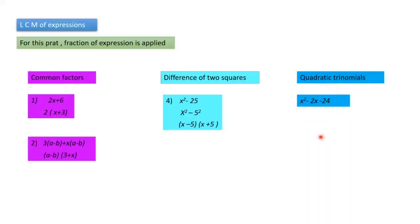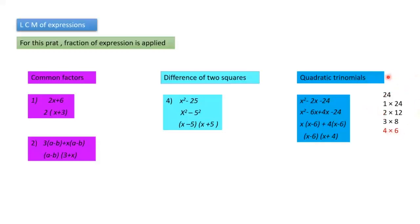Now quadratic trinomials. For example: x² − 2x − 24. Rewrite it as x² − 6x + 4x − 24. How does this happen? You need to find factors of 24: 1×24, 2×12, etc. By subtracting, you build the middle term: 6 − 4 gives −2x. So I wrote −6x + 4x to split the middle term.